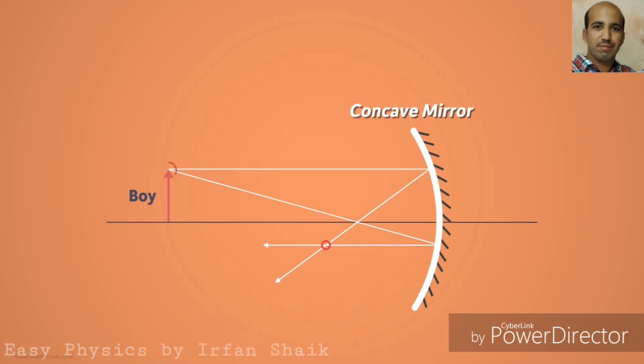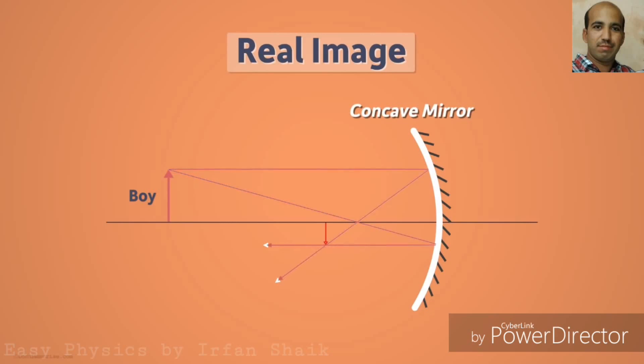The image of the top of the arrow forms at this point. This is called a real image. A real image is formed by the converging of reflected rays. The real images formed by a concave mirror are always inverted.